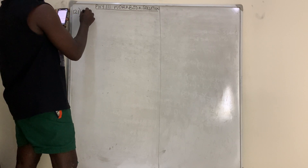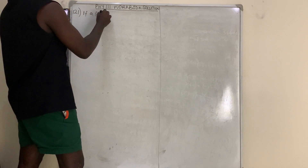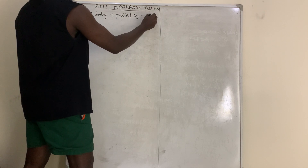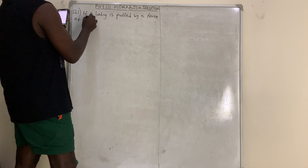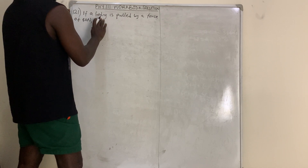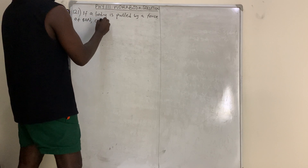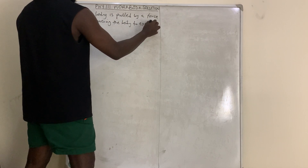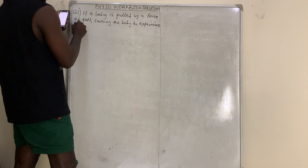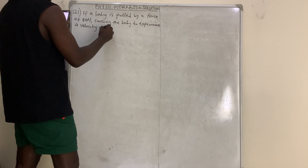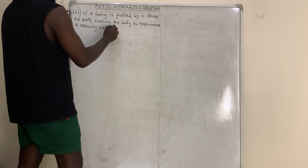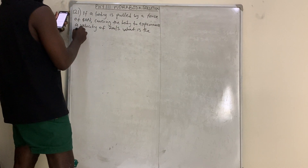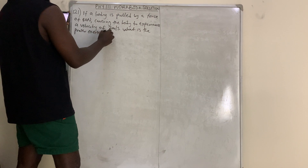Question number 121 says: if a body is pulled by a force of 40 newtons, causing the body to experience a velocity of 2 meters per second, what is the power exerted on the body?